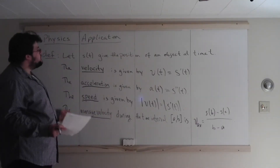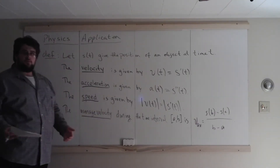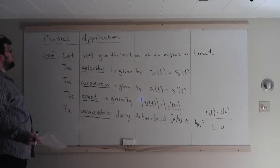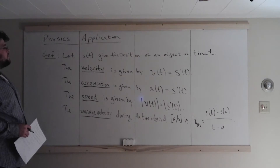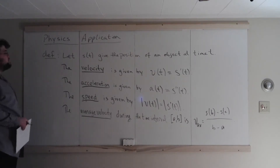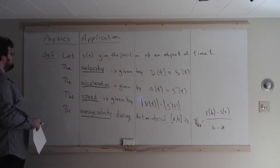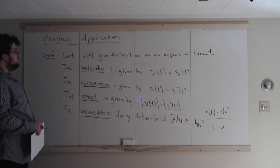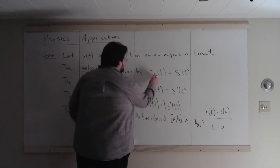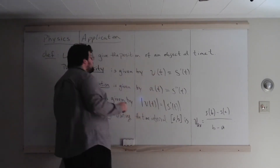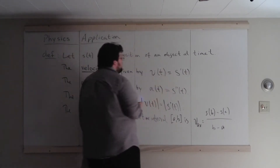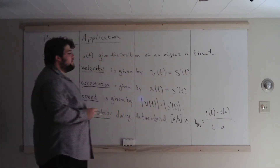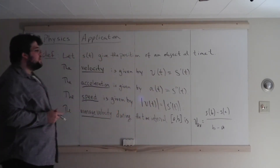We're going to look at a way we can interpret derivatives using physics applications. Our function s of t is going to give the position of an object at time t. The velocity is given by v of t — we could use that notation for velocity — but the velocity is given by s prime of t, the first derivative of the position function.